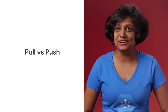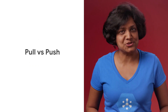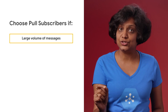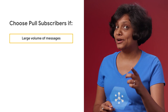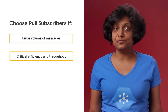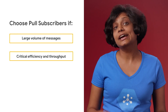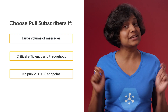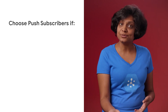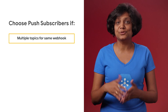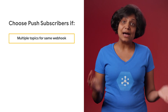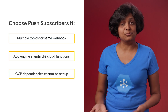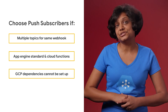Now to the most important question: which mechanism is best for your application? You would typically set up pull subscribers if the volume of messages is large — like many more than one per second — if efficiency and throughput of message processing is critical, and if a public HTTPS endpoint with a non-self-signed SSL certificate is not feasible to set up. It's recommended to use push subscribers if there are multiple topics that must be processed by the same webhook, with App Engine Standard and Cloud Function subscribers, and if you use an environment where Google Cloud Platform dependencies such as credentials and client libraries are not feasible to set up.